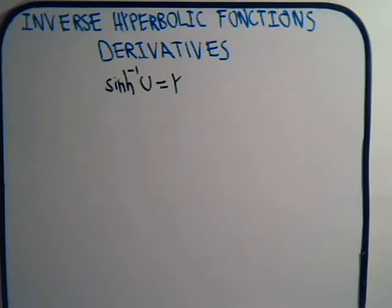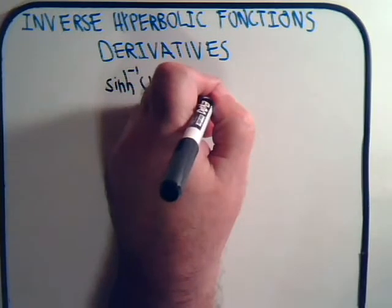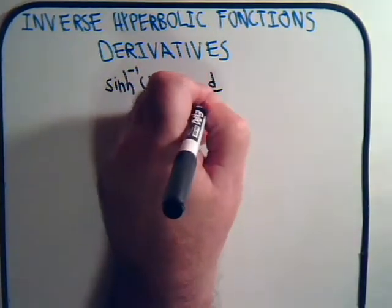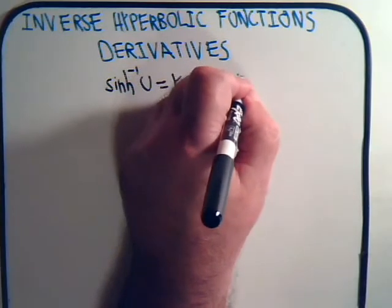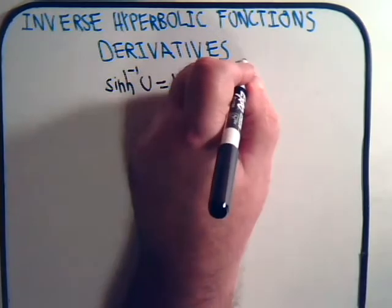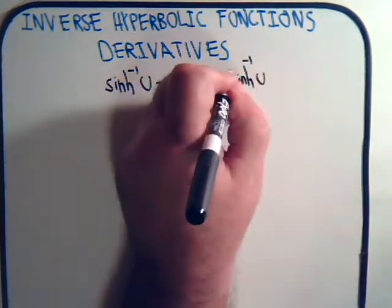Okay, we're going to spend the next several videos deriving derivatives for inverse hyperbolic functions. And we're going to get started here by considering the inverse hyperbolic sine function. And what we want to find then is an expression for ddx of inverse hyperbolic sine of u.